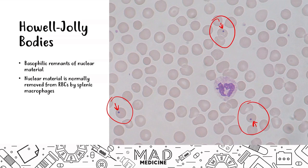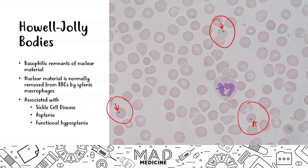This basophilic nuclear material is usually removed from the red blood cell by the splenic macrophages as they go through the spleen. But because you have removed the spleen for treatment of hereditary spherocytosis, you're still going to see Howell-Jolly bodies in the smear — it tells you that the patient does not have a functioning spleen. You can see these in cases of sickle cell disease, which leads to autosplenectomy, in cases of surgical asplenia where you remove the spleen, and in functional hyposplenia where the spleen is not functioning properly.